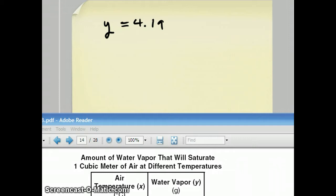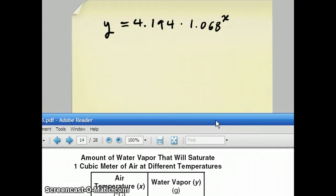So that's going to be 4.194 times 1.0675 rounds to 0.8 to the x power. Now this question is only worth four points so if you round it wrong you lose a point.